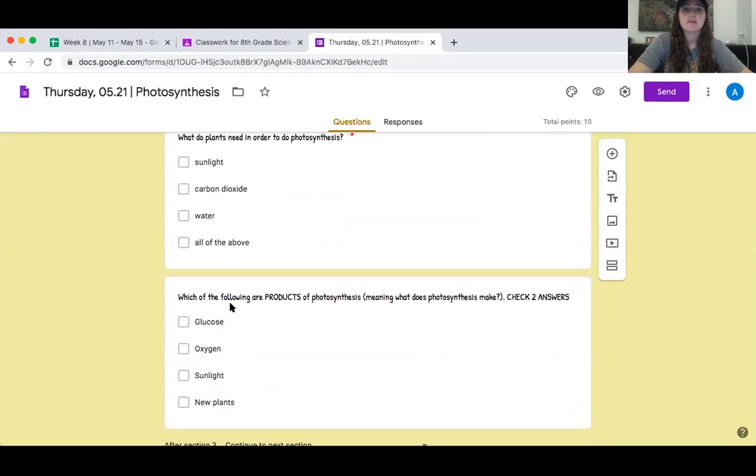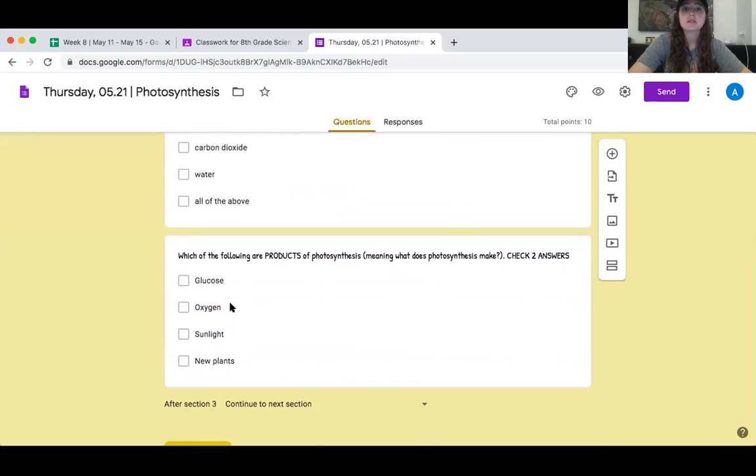Now which of the following are products of photosynthesis, meaning what does photosynthesis make? Which of the following are products of photosynthesis? Check two answers. You should check glucose and oxygen. Sunlight and new plants are not products of photosynthesis. You should have said glucose and oxygen.